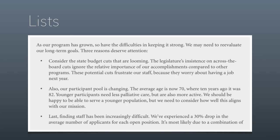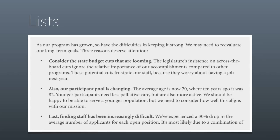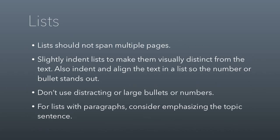There's one final formatting change that helps a lot, especially if your list contains multiple paragraphs. You can bold or italicize the topic sentence of the first paragraph to help people know what that list item is about. What's really useful about this convention is that you could just read the bolded topic sentences and know what the entire list is about. In formatting lists: don't let lists span multiple pages; keep them relatively short; slightly indent lists to make them visually distinct; indent and align the text so the number or bullet stands out; don't use distracting bullets; and consider emphasizing topic sentences with bolding or italics.